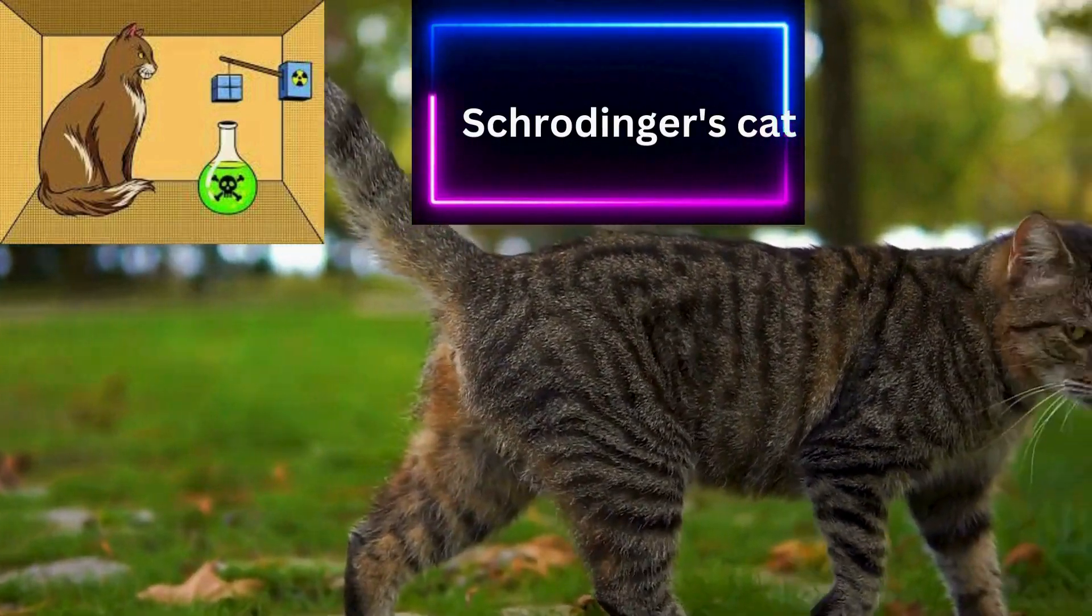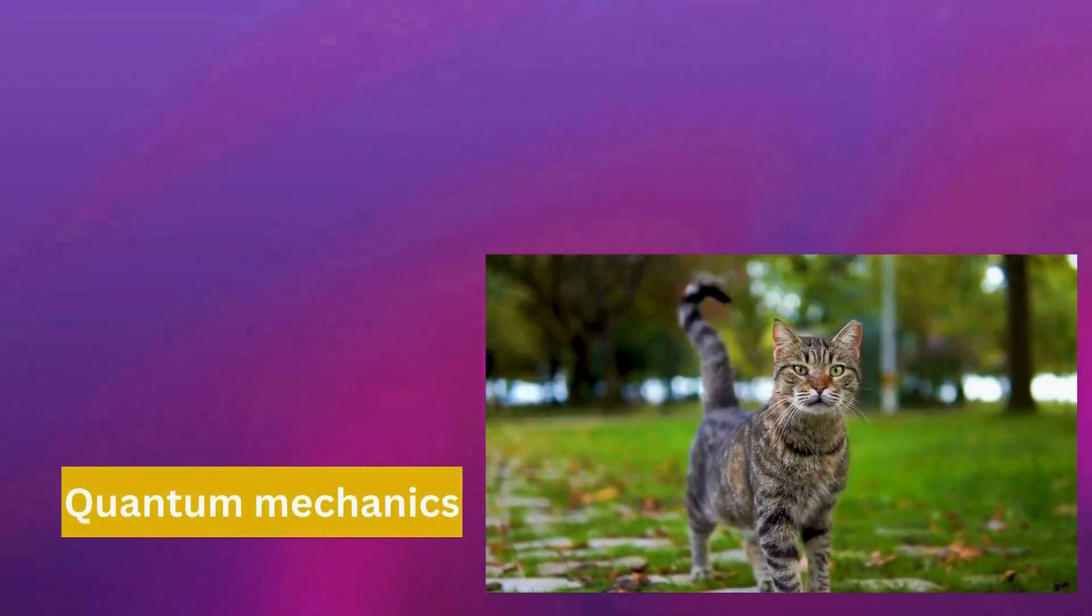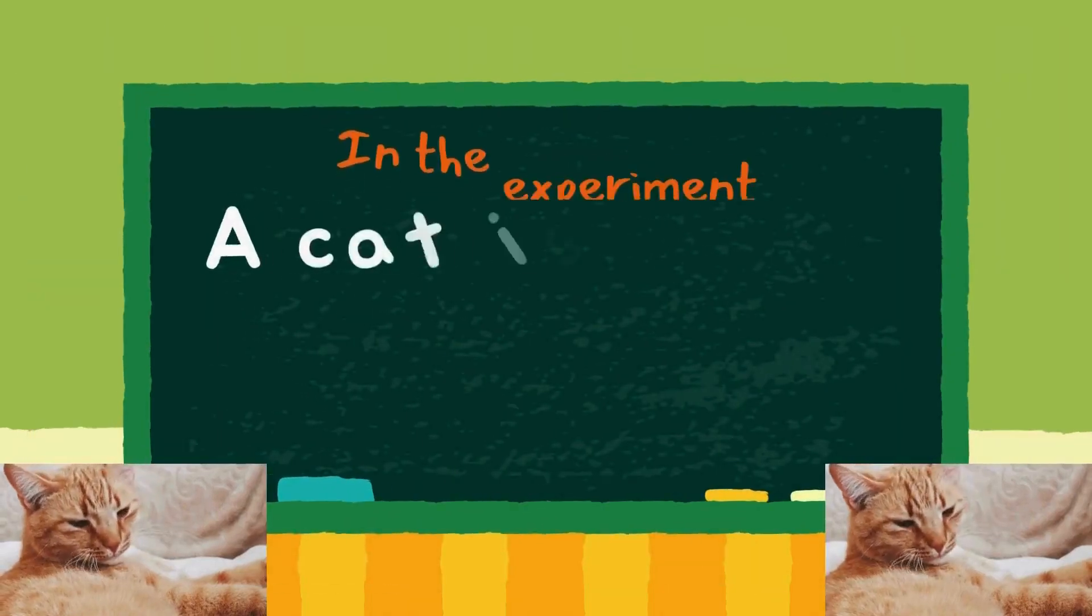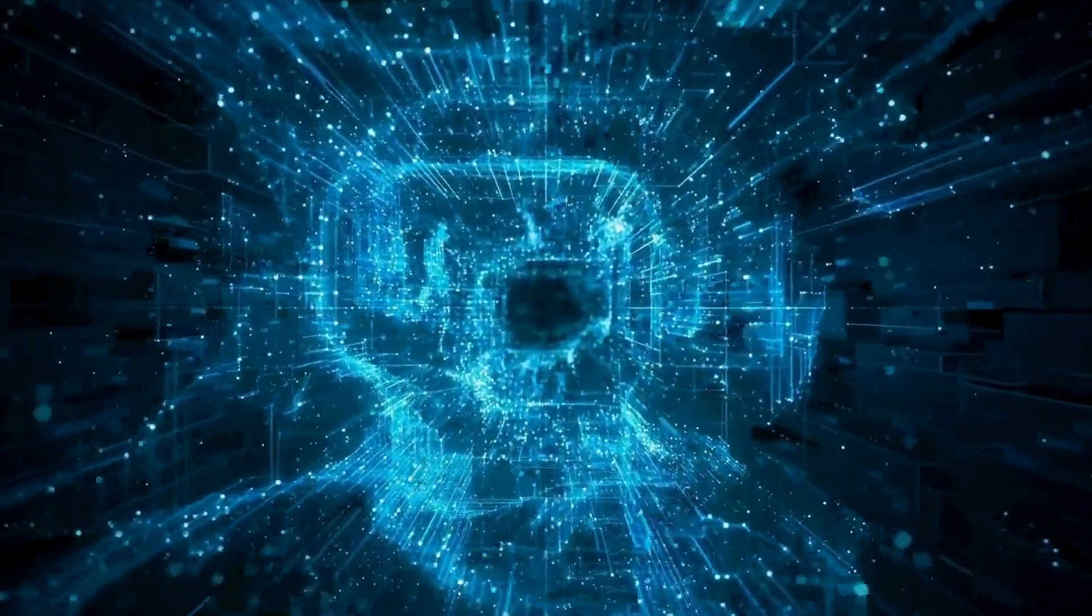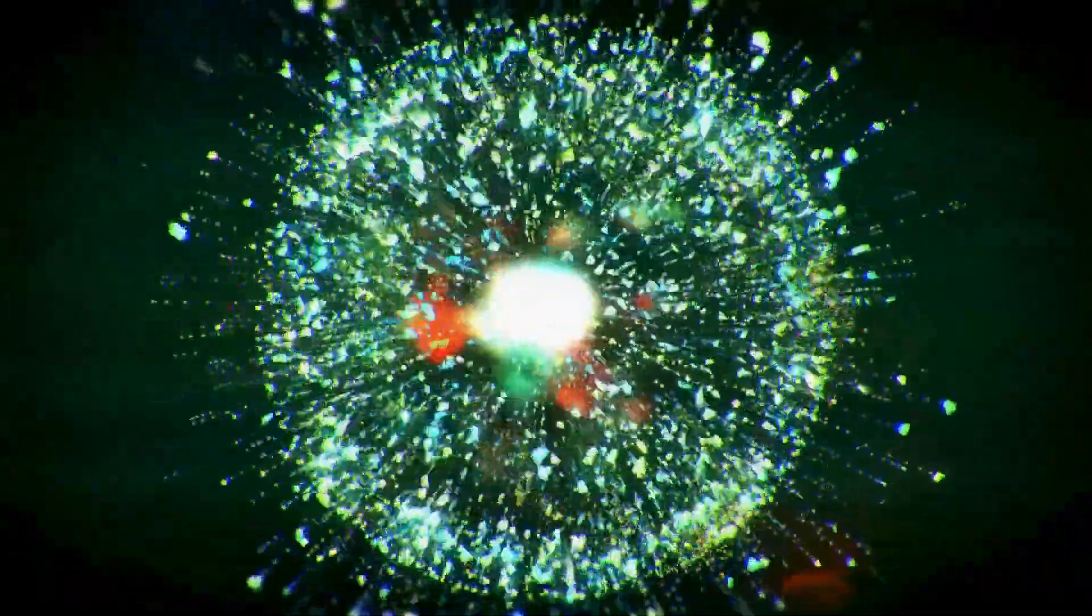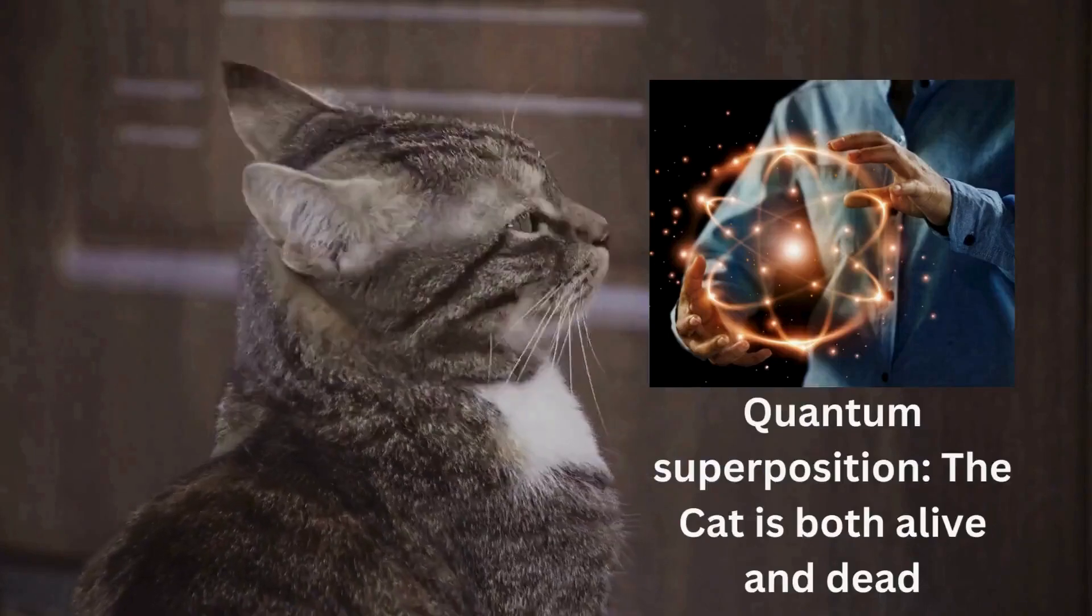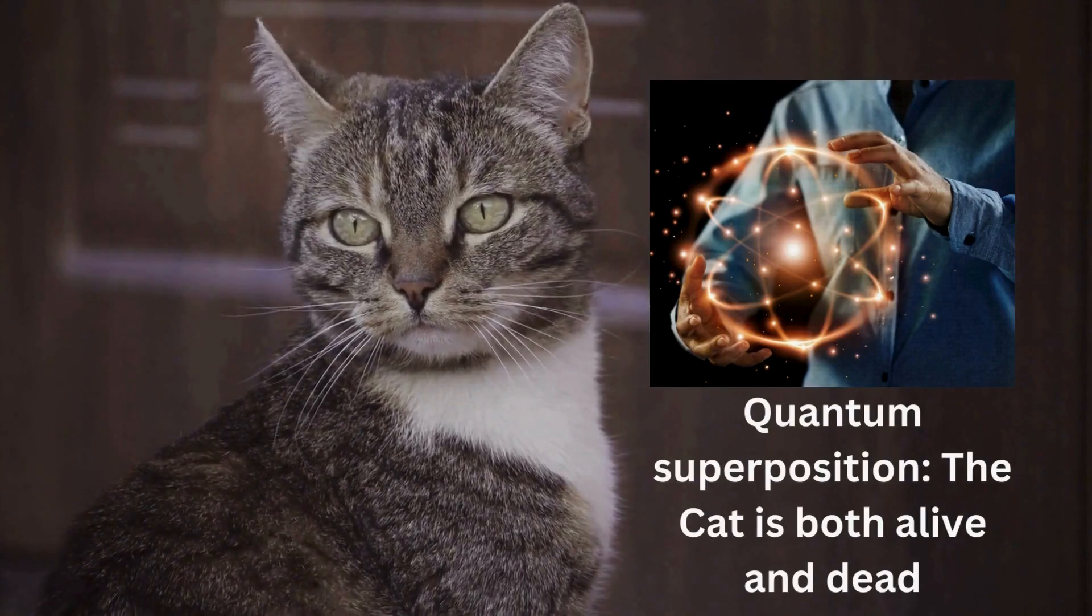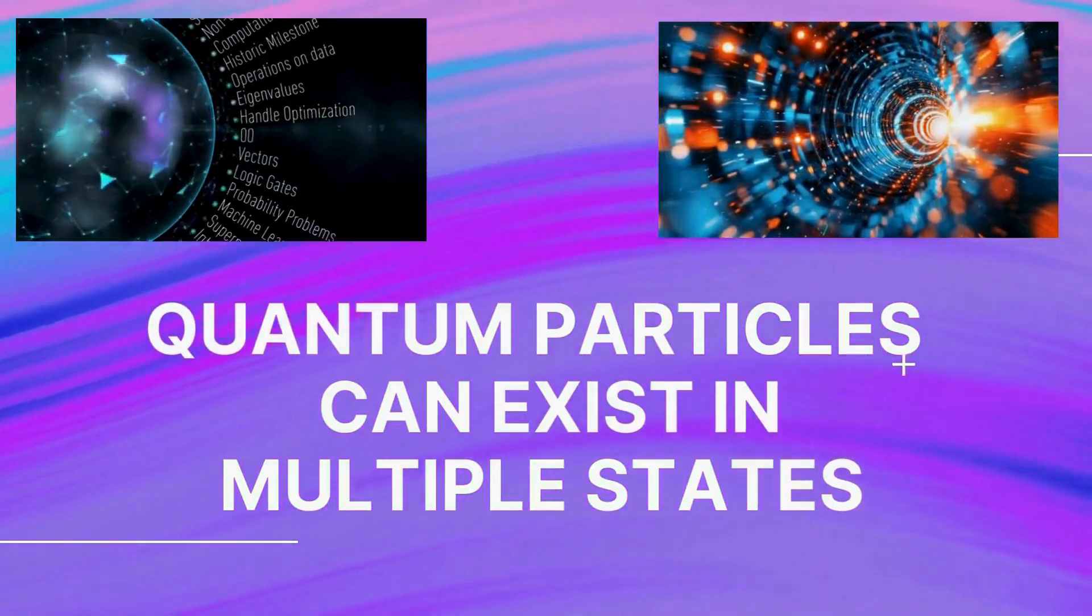Schrödinger's cat is indeed a famous thought experiment that illustrates some of the strange aspects of quantum mechanics and the concept of superposition. In the thought experiment, a cat is placed in a sealed box along with a radioactive atom and a device that will release poison if the atom decays. According to quantum mechanics, until the box is opened and an observation is made, the cat's state is described by a quantum superposition of being both alive and dead simultaneously. This scenario highlights the concept of quantum particles that can exist in multiple states at the same time until a measurement is made.